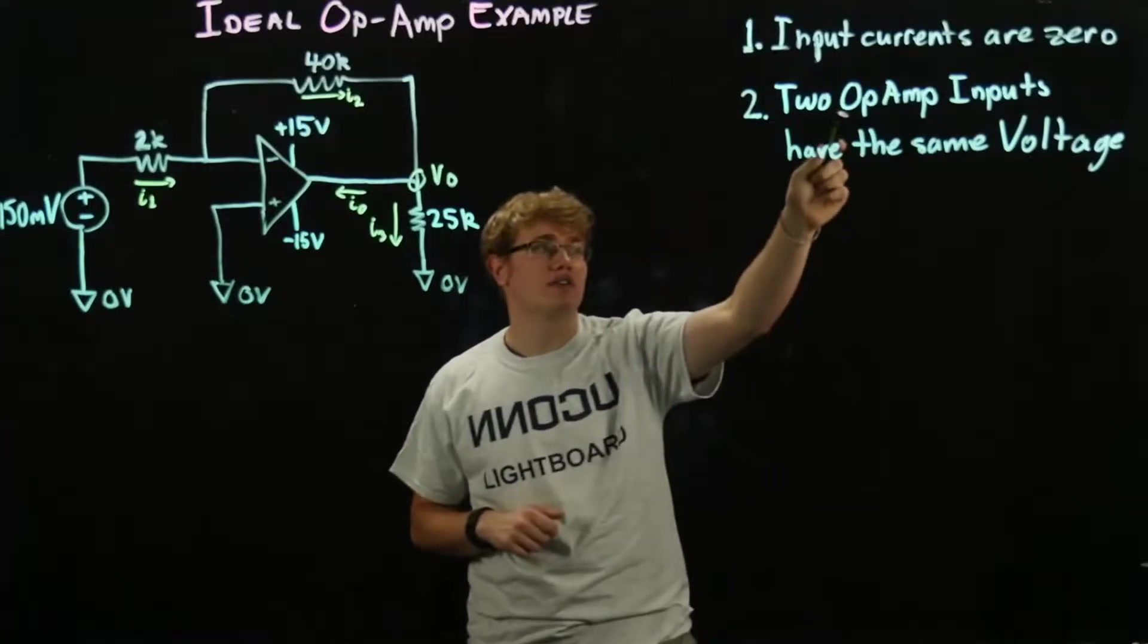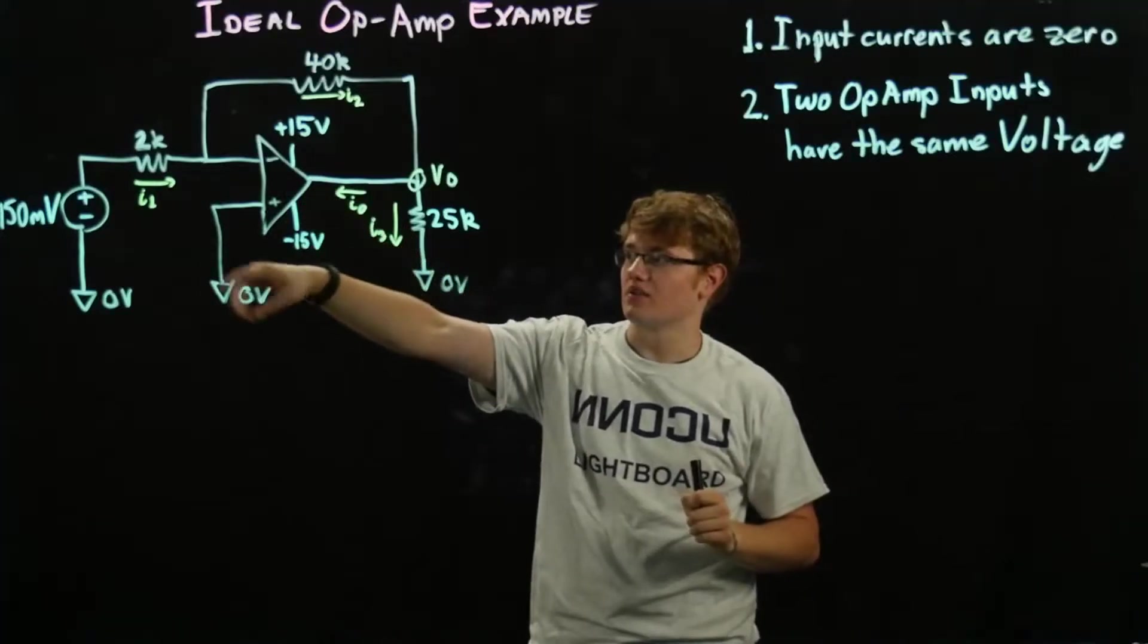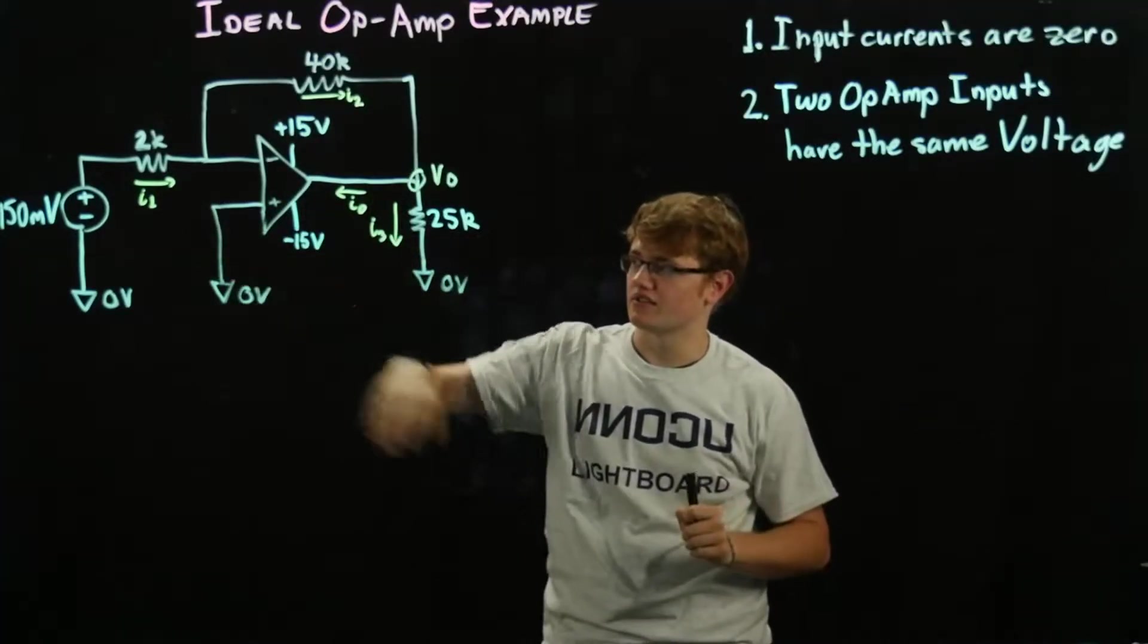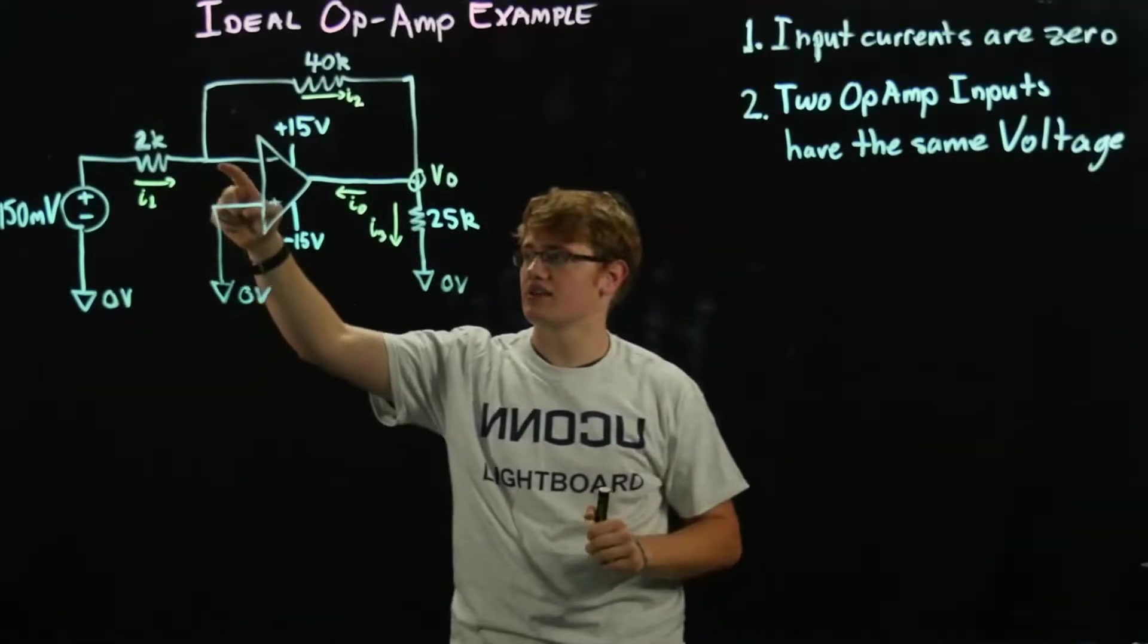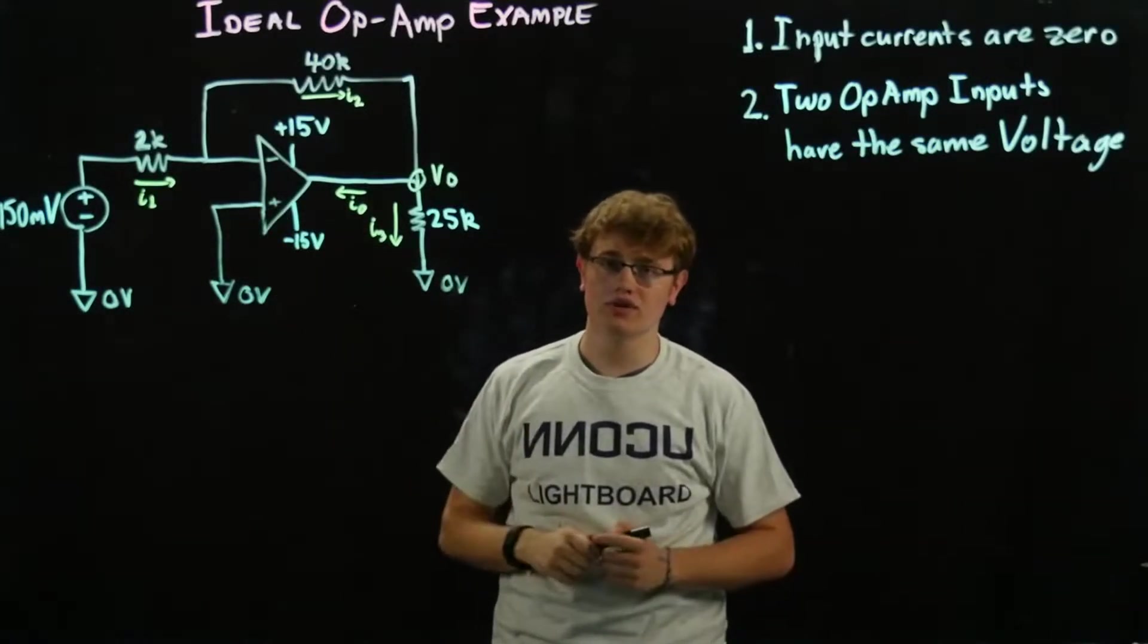The first one is the input currents are going to be zero. So in this example, we have an op-amp surrounded by resistors and a voltage source, but the currents going into this and this, they're both going to be zero.